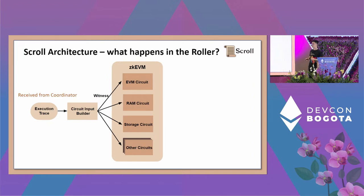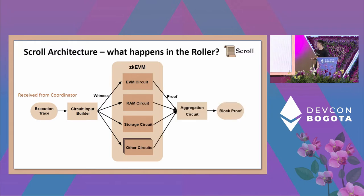You need a circuit input builder in between to translate your execution trace — fetched directly from the EVM — into circuit-specific witnesses. Since ZKEVM has multiple circuits, it needs multiple proofs: a proof for the EVM circuit, a proof for the RAM circuit, and so on. All those proofs need to be verified on layer one efficiently. So we build an aggregation circuit that proves all the individual proofs are correct — it asserts that the EVM proof is correct, the RAM proof is correct, and other circuit proofs are correct. In the end, you have just one block proof for the whole block, proving your execution trace is correct.